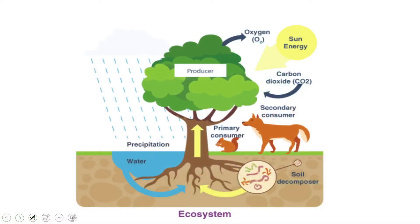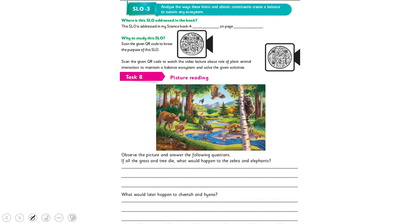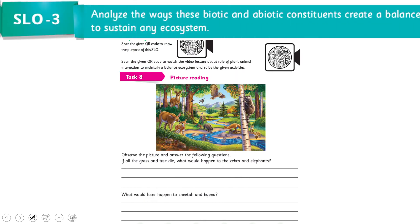Biotic factors and how they interact with an ecosystem — how they are linked with each other in practice, how they depend on each other, and how they sustain the ecosystem.